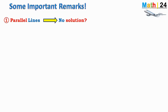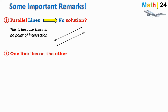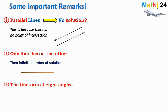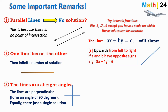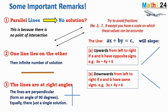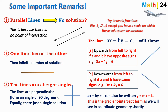Let us take some remarks. If the lines are parallel, there is no solution because there is no point of intersection. If one line lies on the other, there is an infinite number of solutions. If the lines are perpendicular — forming an angle of 90 degrees — there is exactly one solution, and the product of their gradients equals minus one. The line ax plus by equals c slopes upwards from left to right if a and b have opposite signs, e.g. 3x minus 4y equals 6, and slopes downwards if they have the same sign, e.g. 3x plus 4y equals 6. This equation can also be written as y equals mx plus k, called the gradient-intercept form.